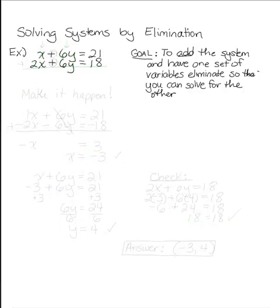When you're trying to solve a system using the elimination method, the general goal is to add the system and hopefully have one of the variables eliminate or cancel out so that you can solve for the other variable.